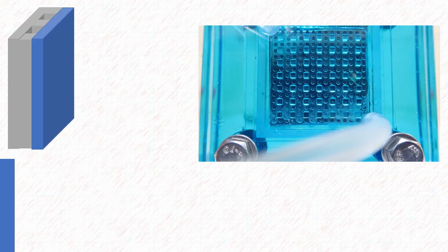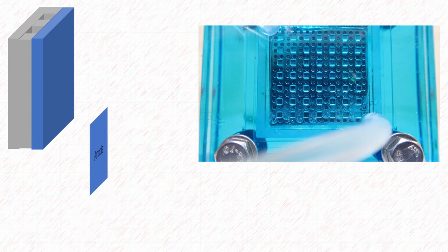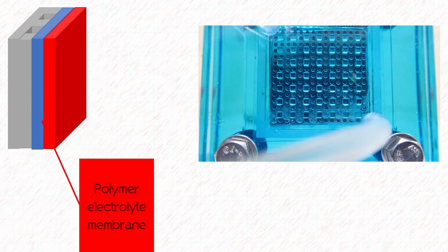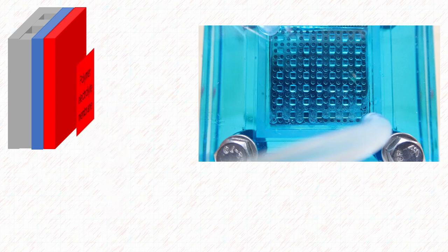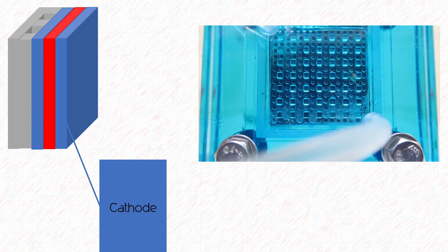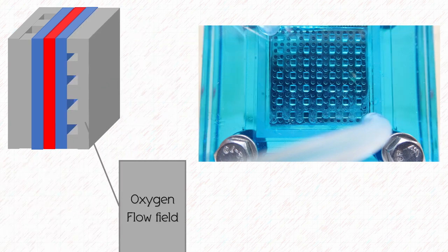Next to this is an anode and the anode consists of a palladium catalyst and that helps the reaction. Between the two electrodes there is a polymer electrolyte membrane which allows the transfer of the hydrogen gas and hydrogen ions. Then there is the other electrode, the cathode, and next to this is the oxygen flow field which allows the oxygen to come in and escape from the fuel cell.